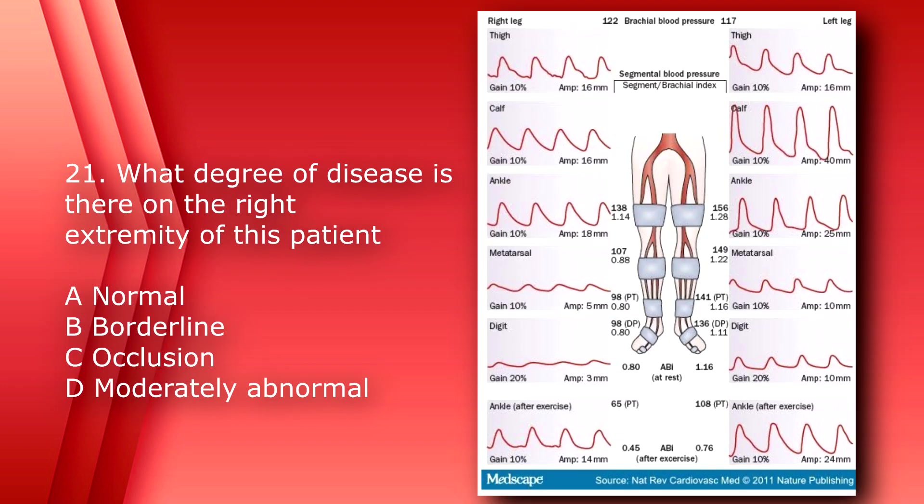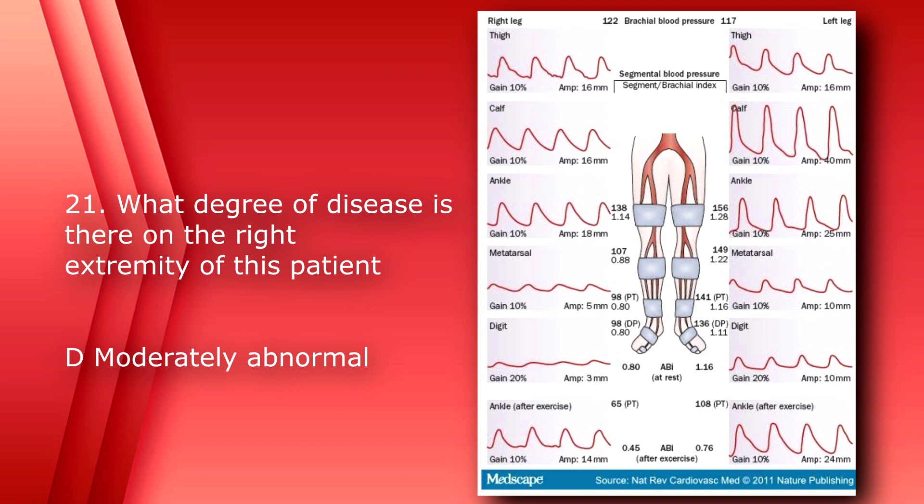Number 21. What degree of disease is there on the right extremity of this patient? A, normal, B, borderline, C, occlusion, or D, moderately abnormal. The answer is D, moderately abnormal. You see that the ABI in the ankle after exercise is 0.45. And moderate peripheral arterial disease is described as ABIs between 0.40 through 0.69.